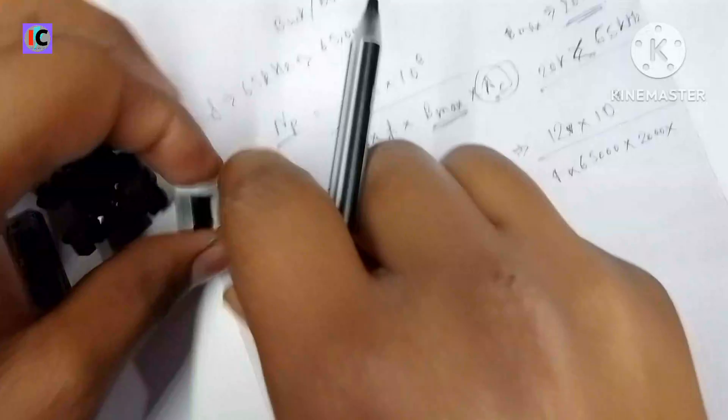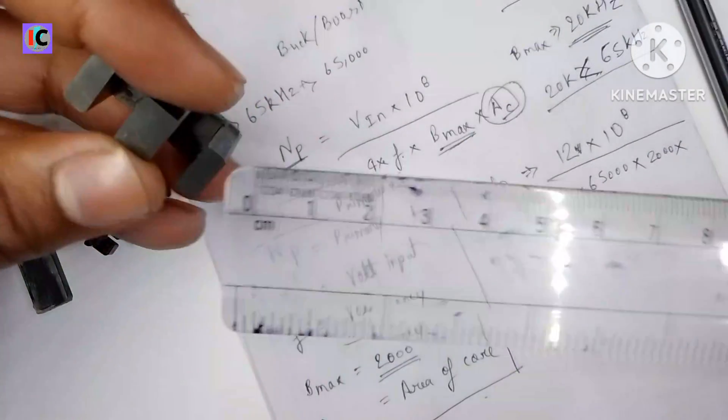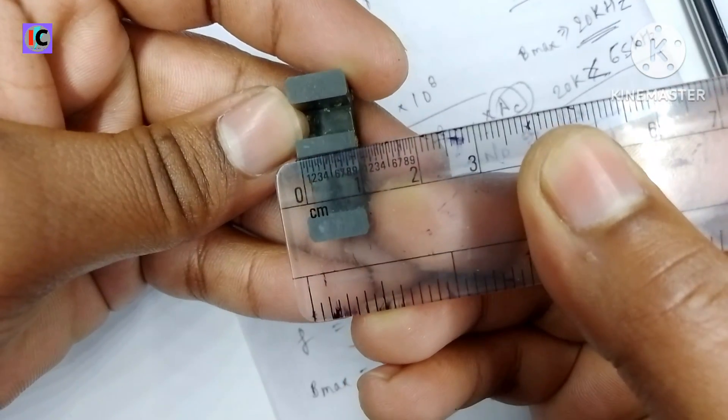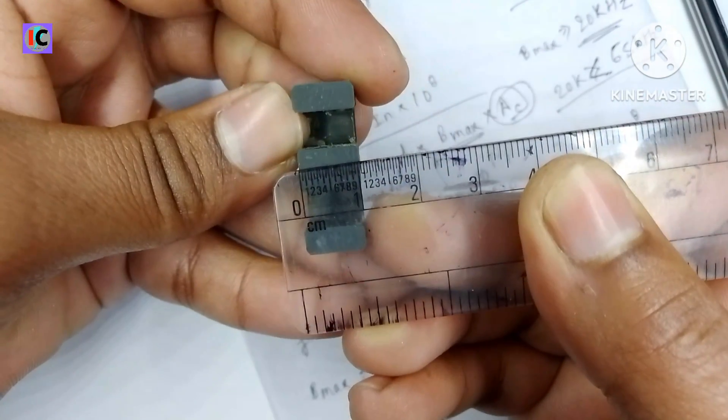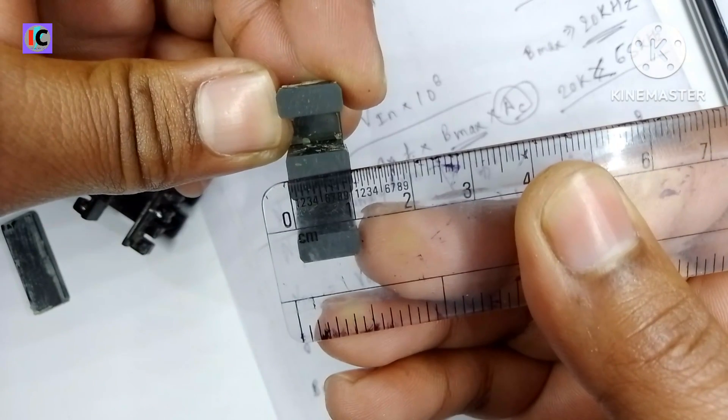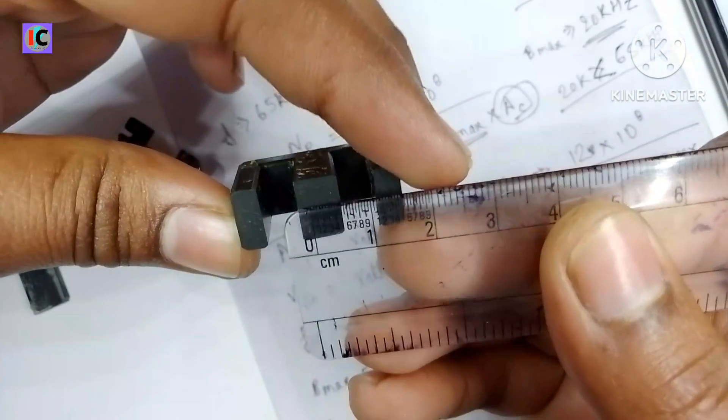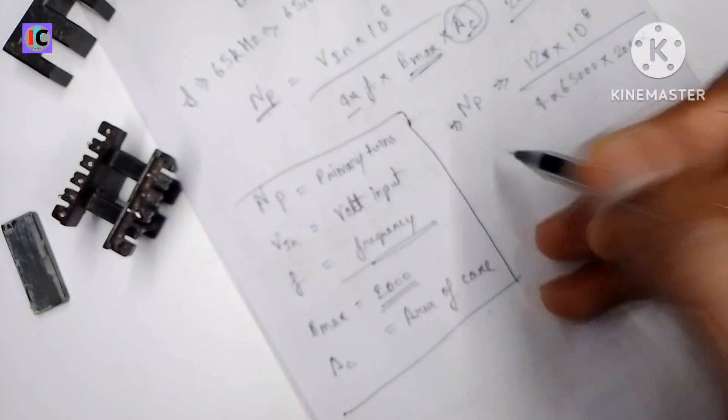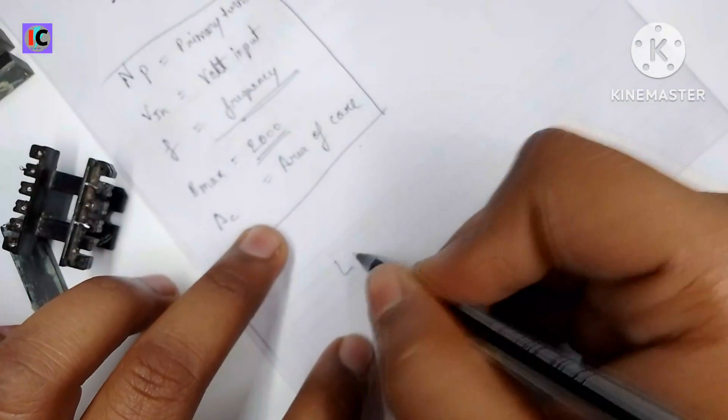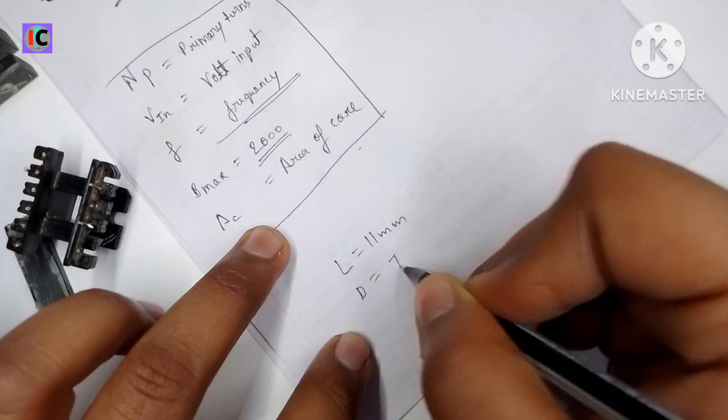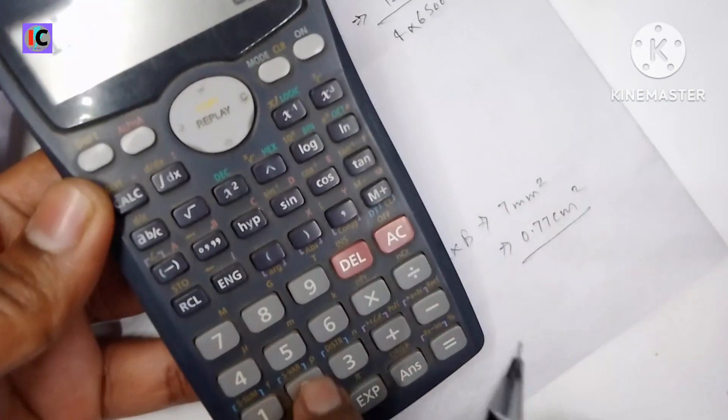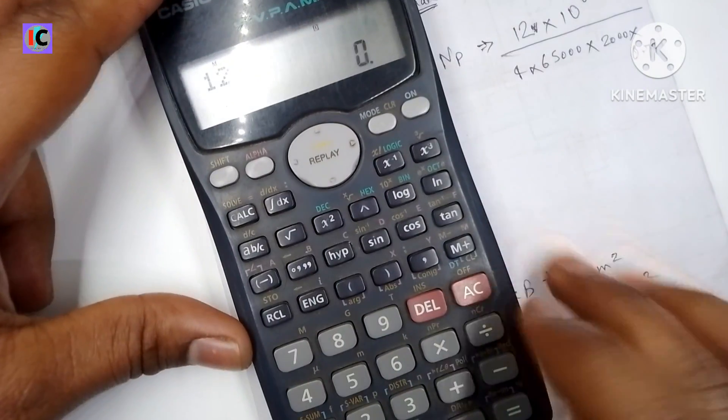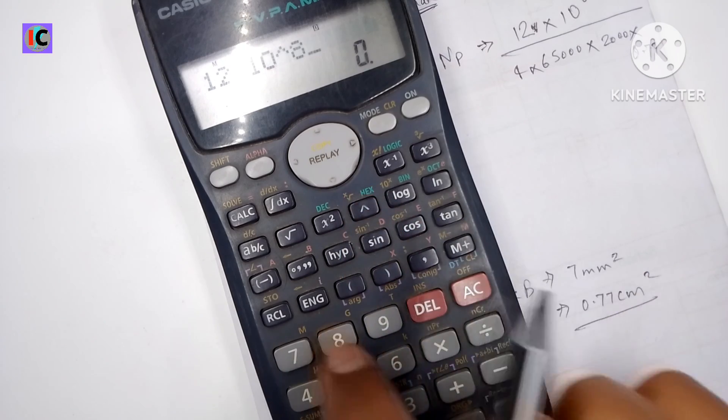After this I'm calculating the ferrite core length and breadth for the calculation of cross-sectional area. The length is 11 mm and breadth is 7 mm. So we are calculating in mm here: 11 and 7 mm, and multiplying this we get 77 mm.